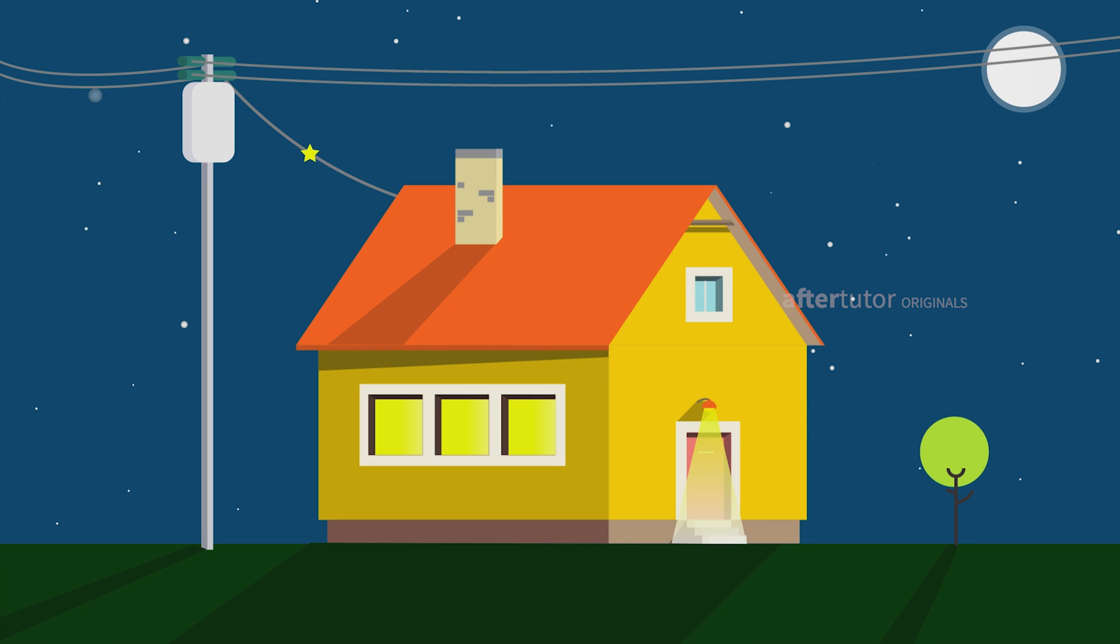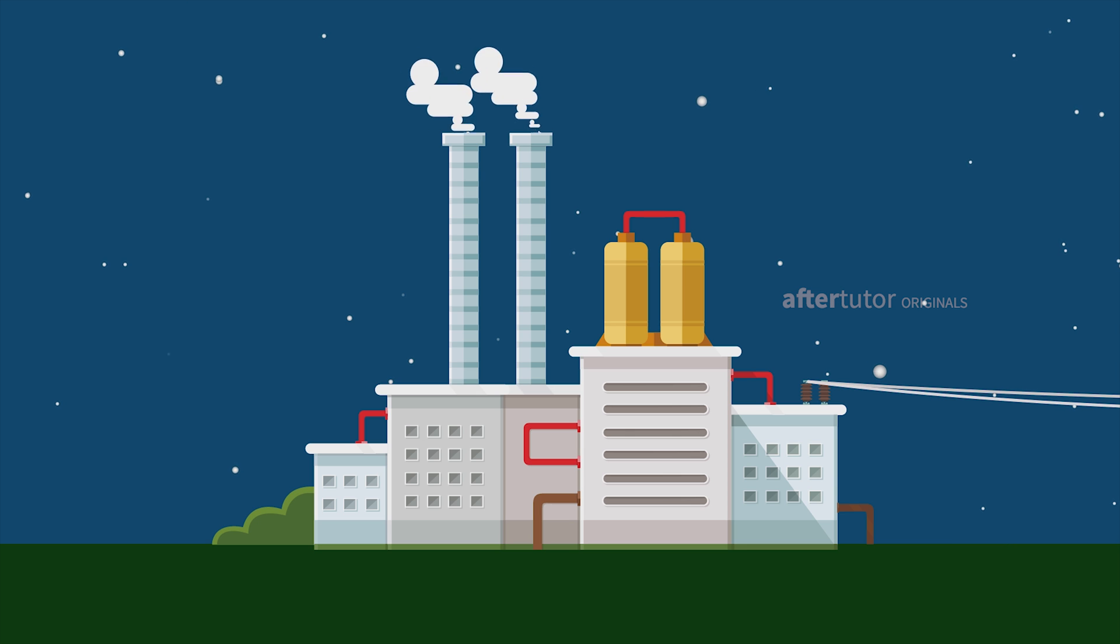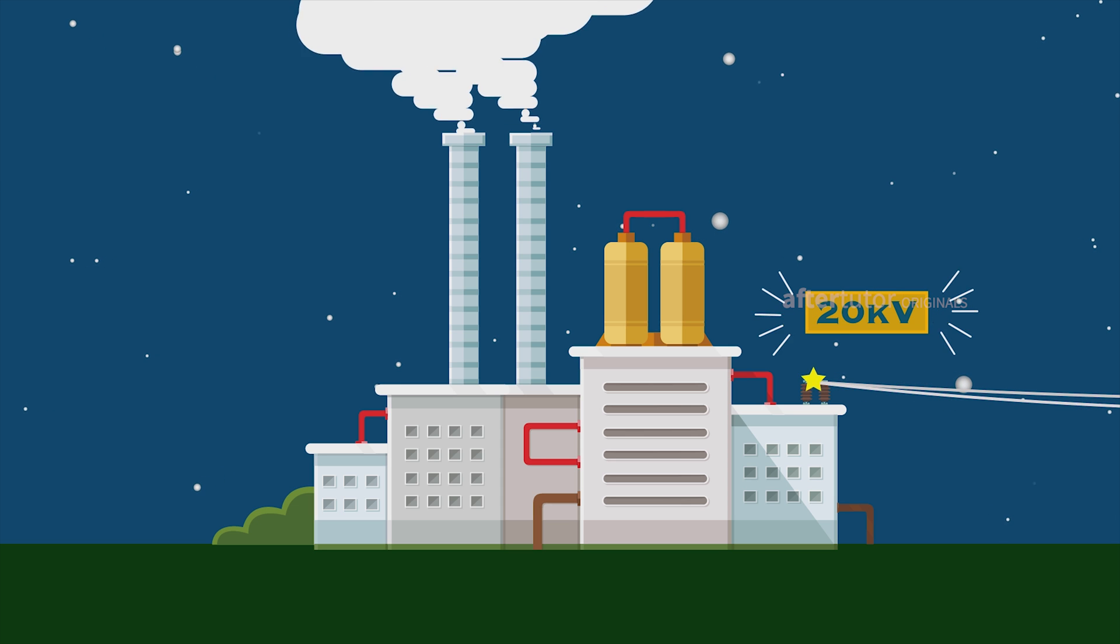How does electricity reach our homes? It all starts from the power station, which gives a voltage of 20 kilovolts.